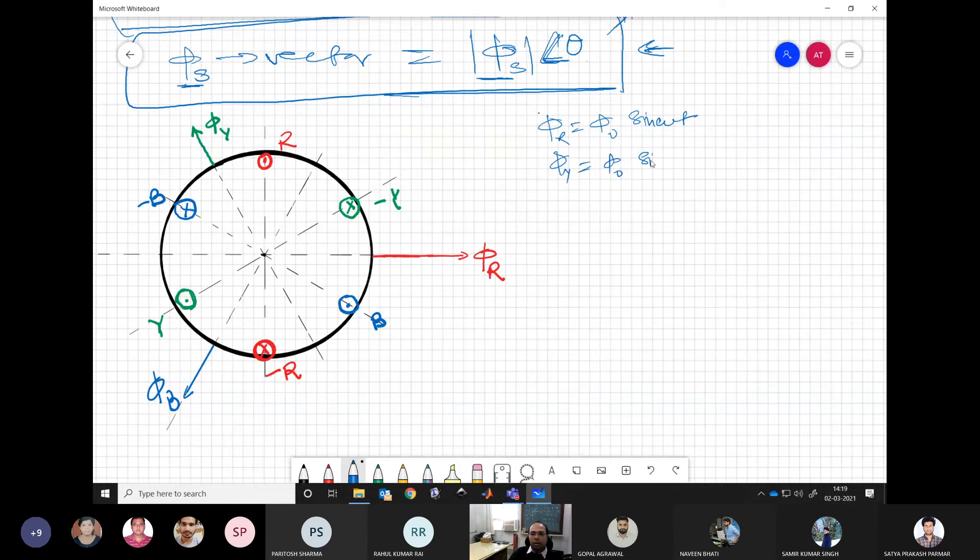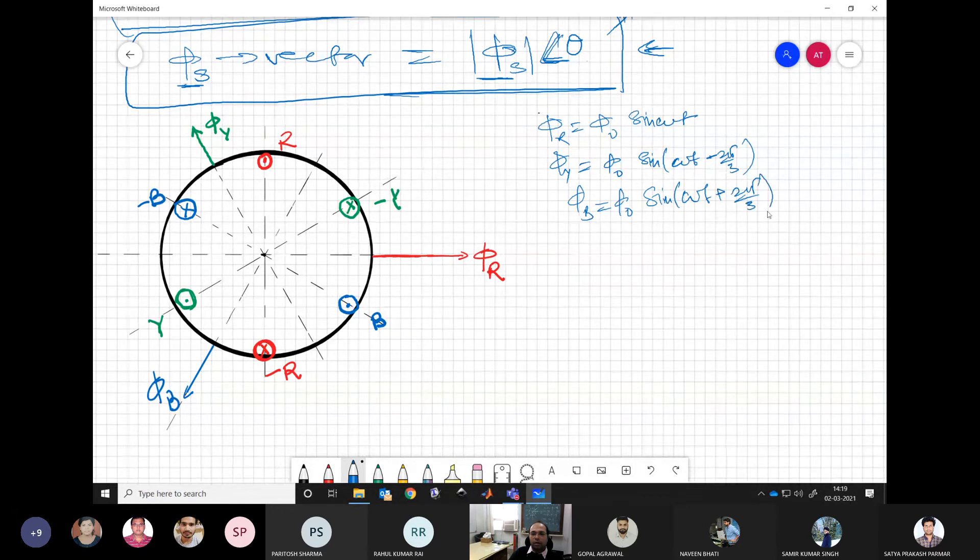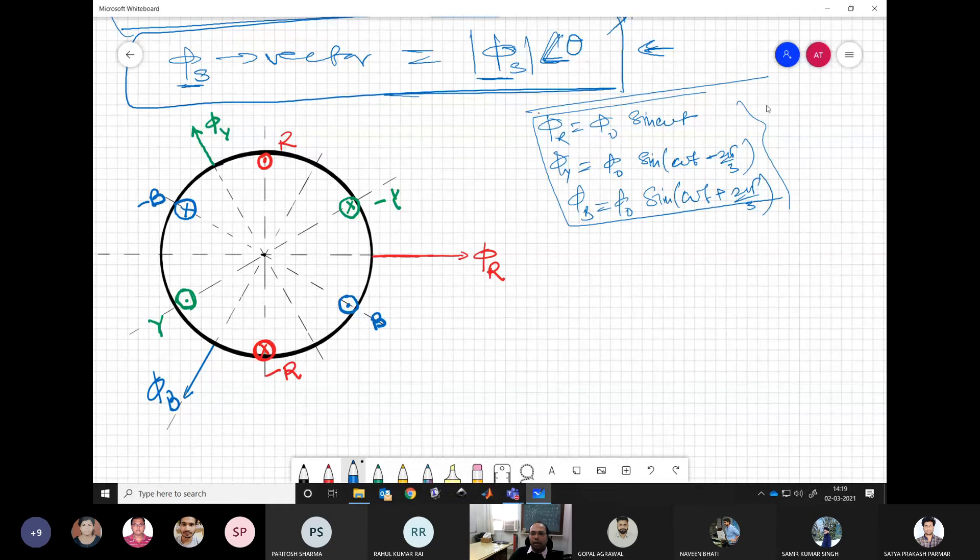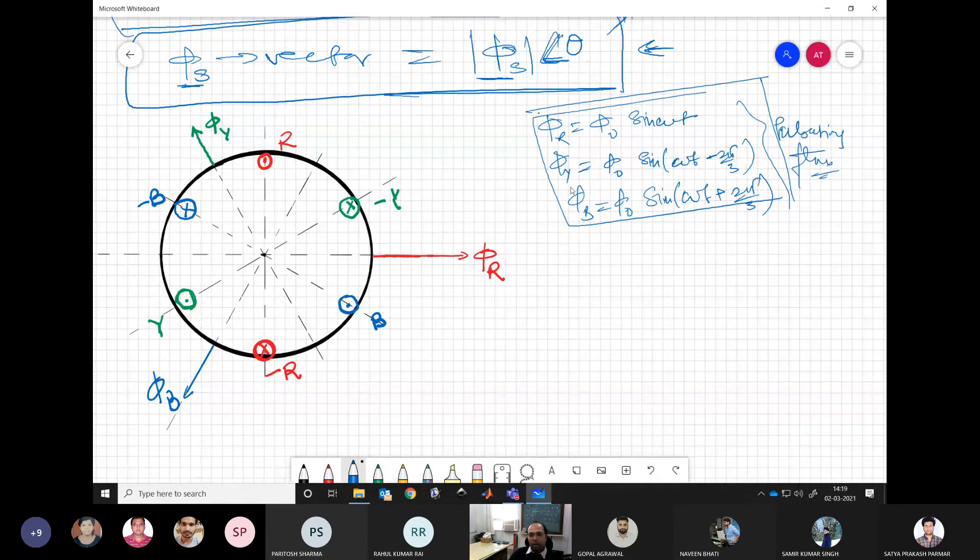So we saw that this is what typically we have. On purpose, if you take the individual phases, these are the fluxes which we are having, and these are, of course, pulsating in nature.